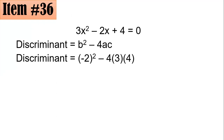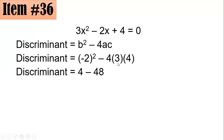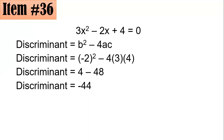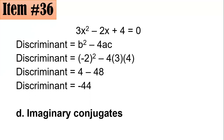By substitution: negative 2 squared minus 4 times 3 times 4. The square of negative 2 is 4, and 4 times 3 times 4 is 48, so we have 4 minus 48, which equals negative 44. A negative discriminant means the roots are not real — hence the roots are imaginary conjugates, letter d.